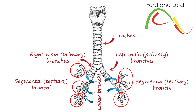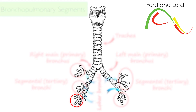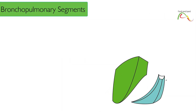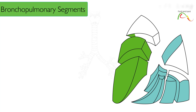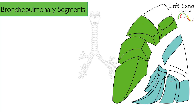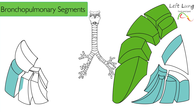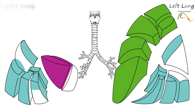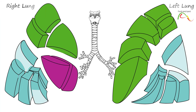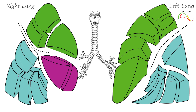It is important to have a good understanding of segmental or tertiary bronchi, as well as bronchopulmonary segments, including their names, positions, shapes, their relationships with other segments, and surrounding anatomical structures. This knowledge becomes extremely important for specialized branches of medicine, such as cardiothoracic surgery, pulmonology, and radiology, for example.